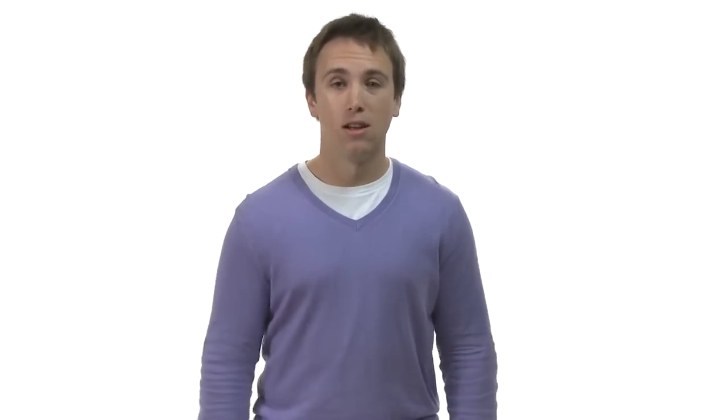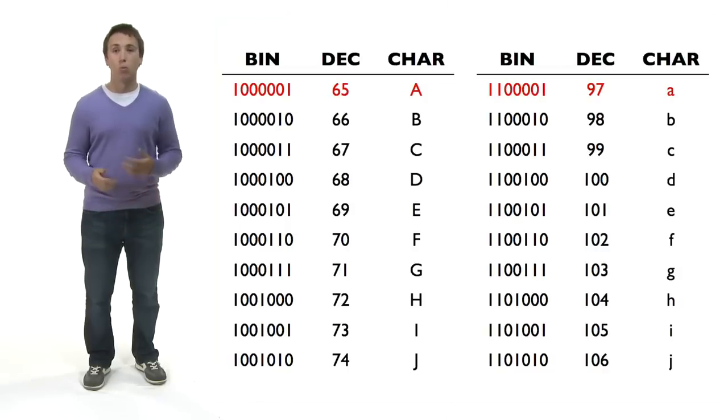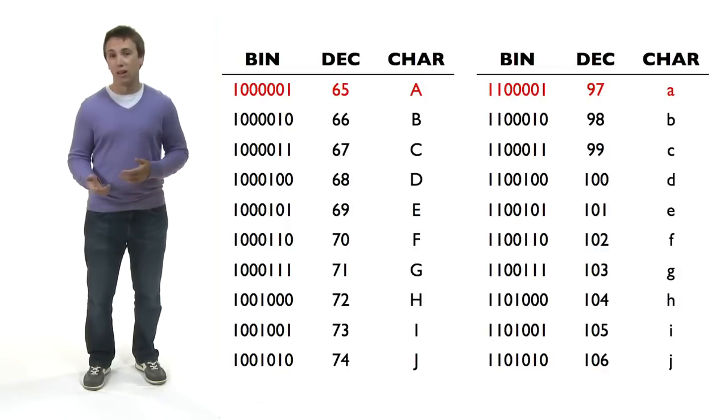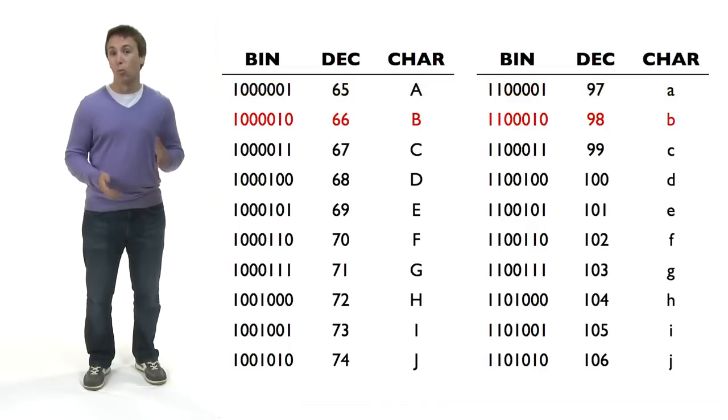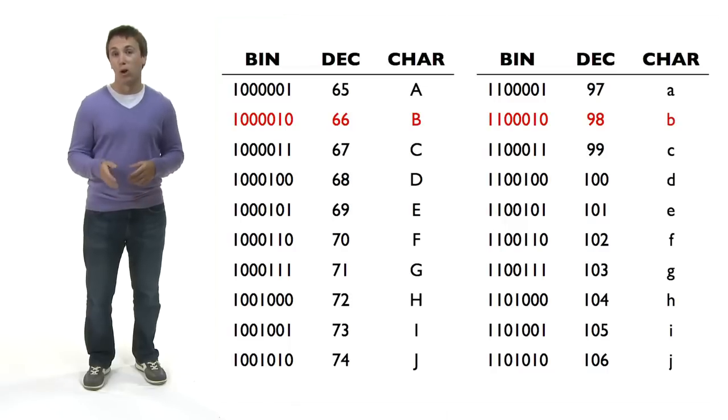Again, if we look at the binary representations, we can see a pattern. Uppercase A is represented by 1000001, and lowercase a is represented by 1100001. Uppercase B is represented by 1000010, and lowercase b is represented by 1100010. Can you tell what's going on here?